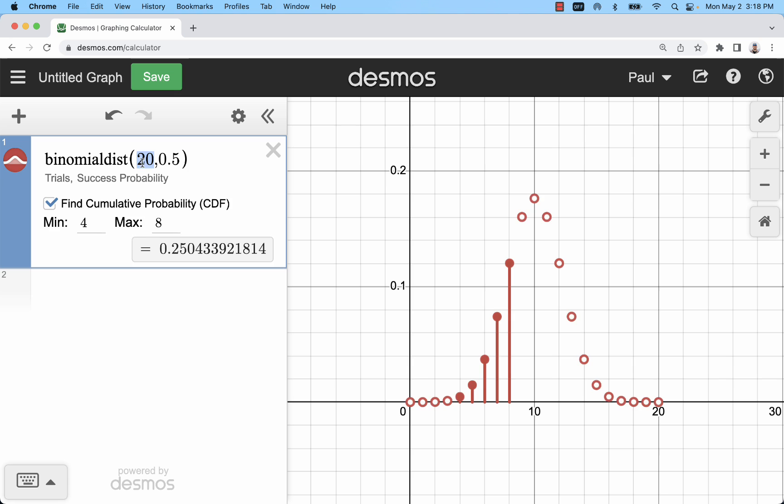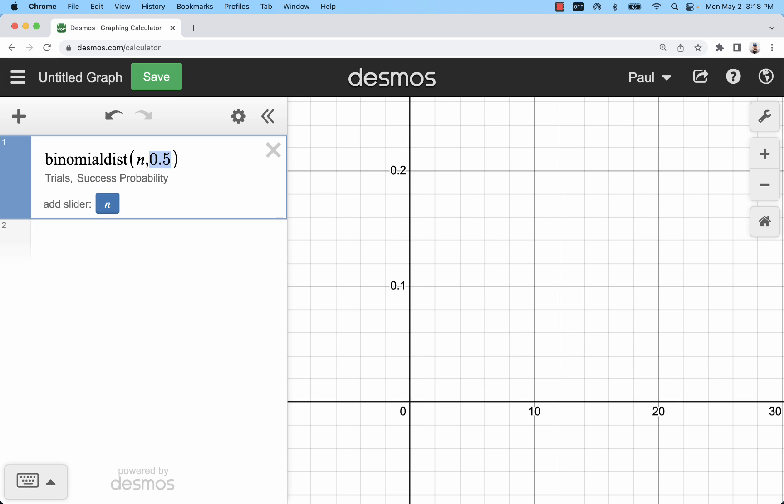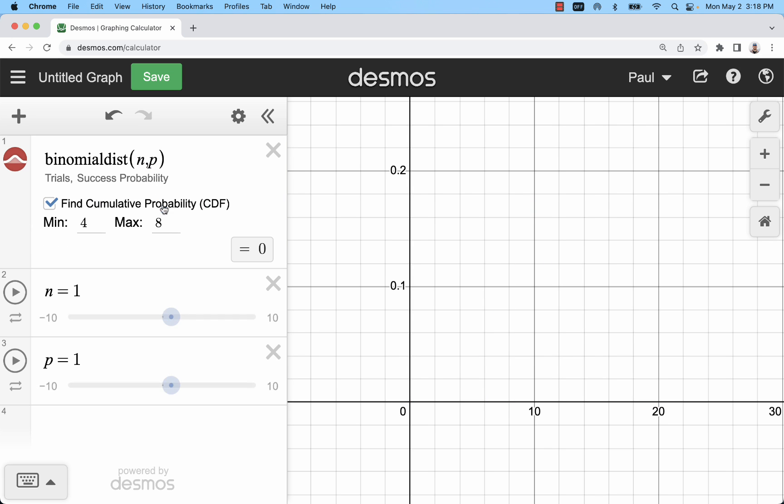Sometimes what I like to do is put sliders for n and p. n would have to be a number at least 0 and have a step of 1. For example, you could go from 0 to 100. p is going to be something between 0 and 1, and you can decide what you want your step to be. For mine, let's say I just want to do 0.1.